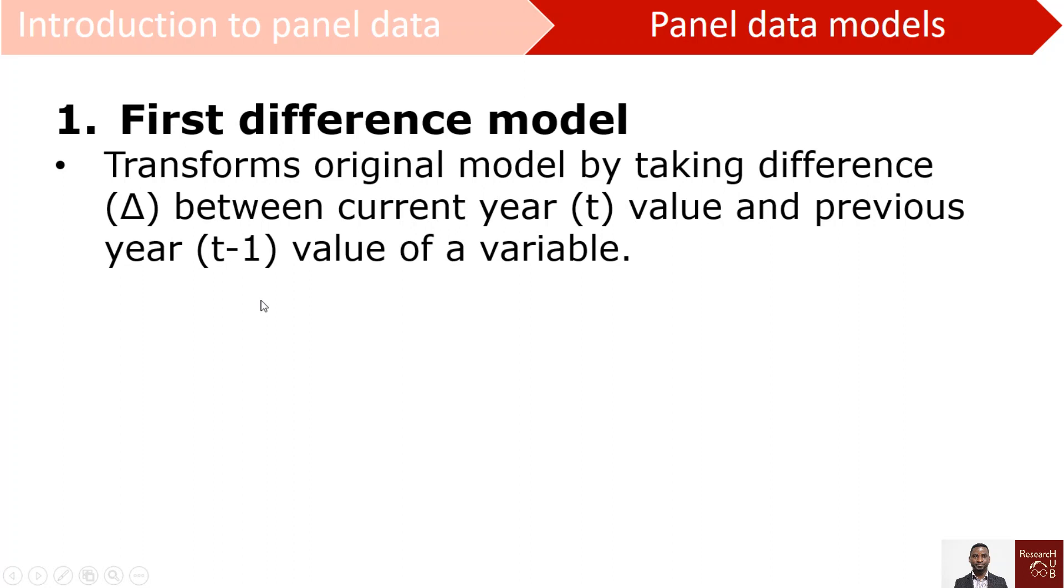So after transforming that, for example, we have the y change. Delta y is just what I explained, the differences between the years. And then by doing this transformation, first differencing, then we are able to remove u_i because it's constant over time.